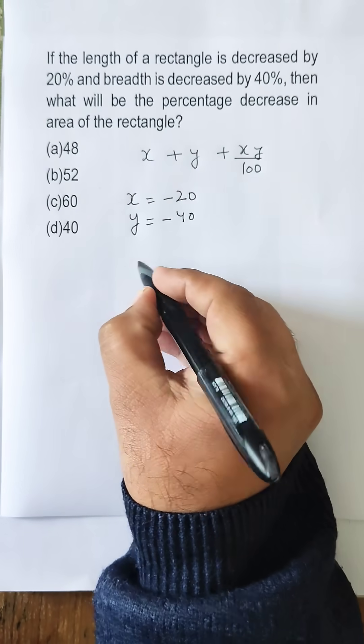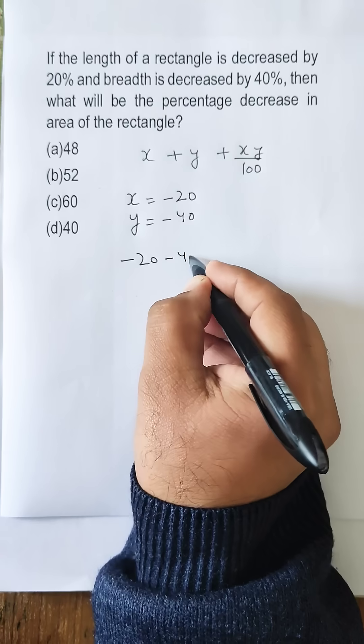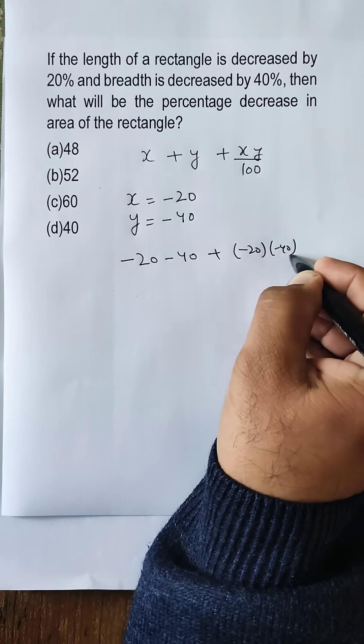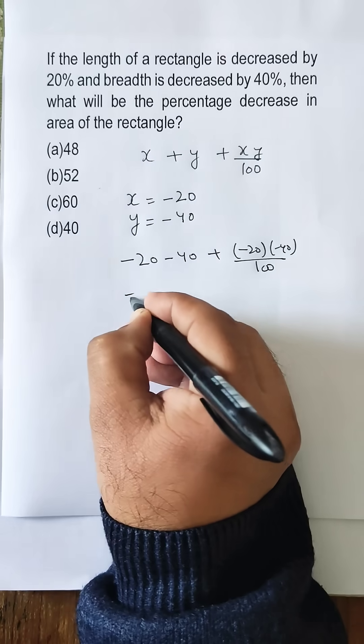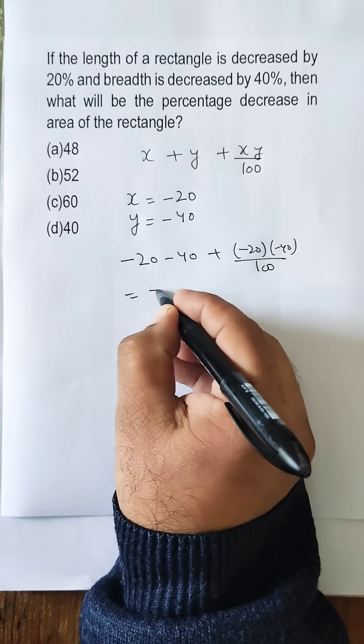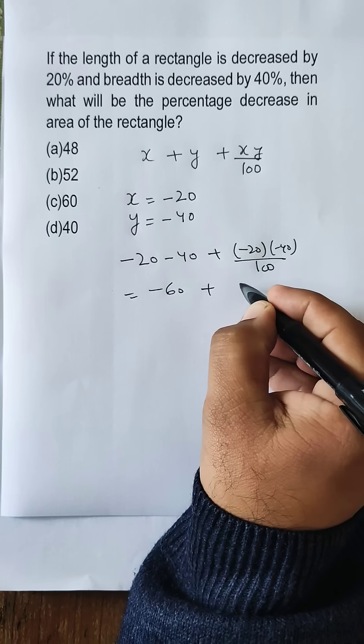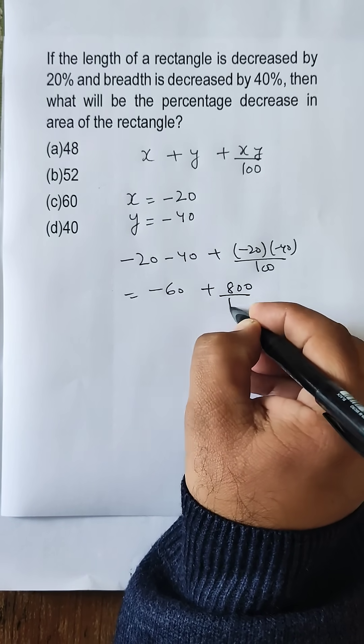Substituting in this formula: minus 20 minus 40 plus minus 20 times minus 40 upon 100. Minus 20 minus 40 will be minus 60, plus minus 20 into minus 40 will be 800 upon 100.